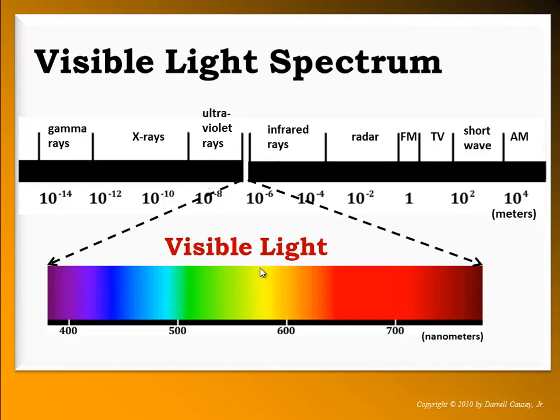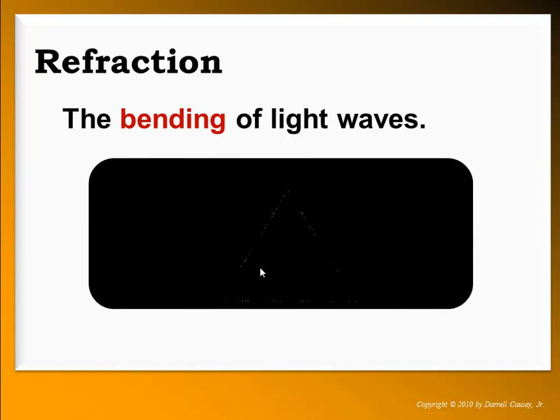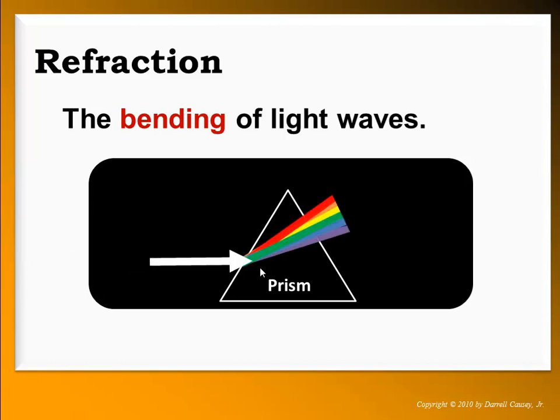Refraction is the bending of light waves. Using a prism, we can shoot white light through it and break it into its six colors.